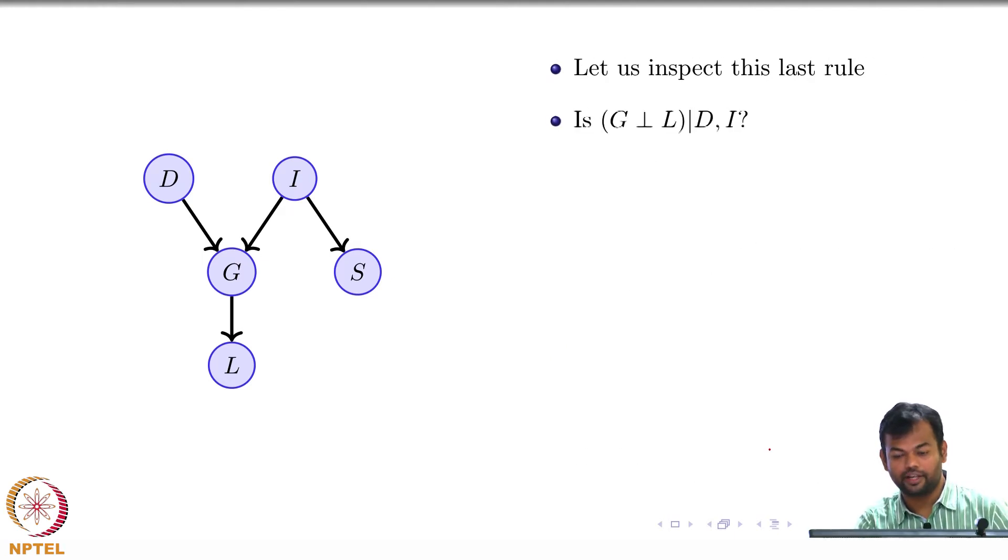Let us inspect this last rule. Let me ask you: is G independent of L given D, I? You know that the course was difficult, you know that the student was intelligent or not. Now, is the grade independent of the letter?